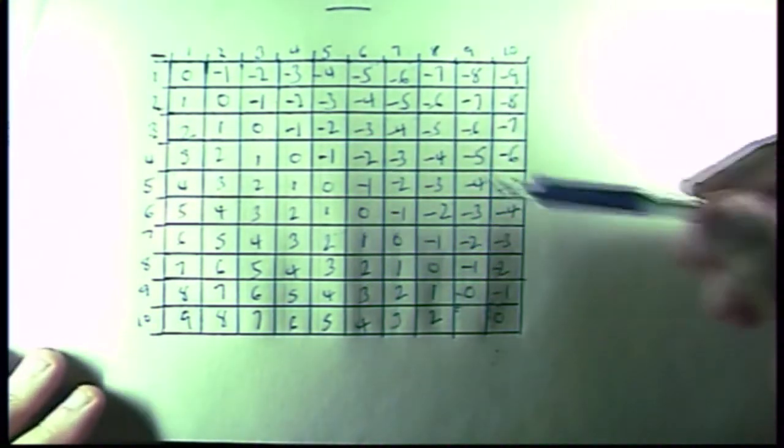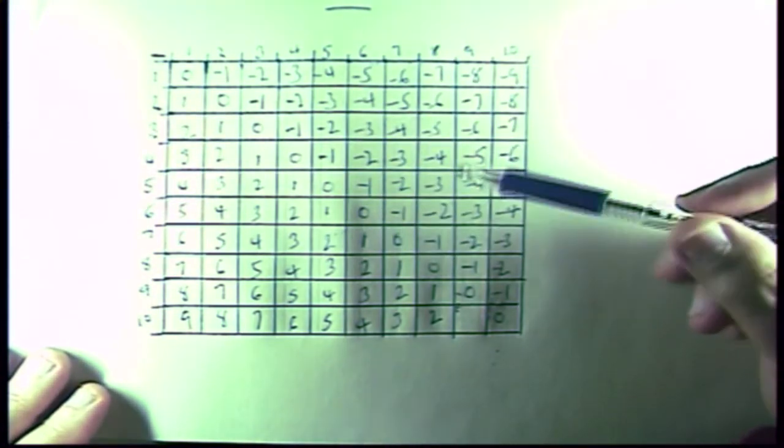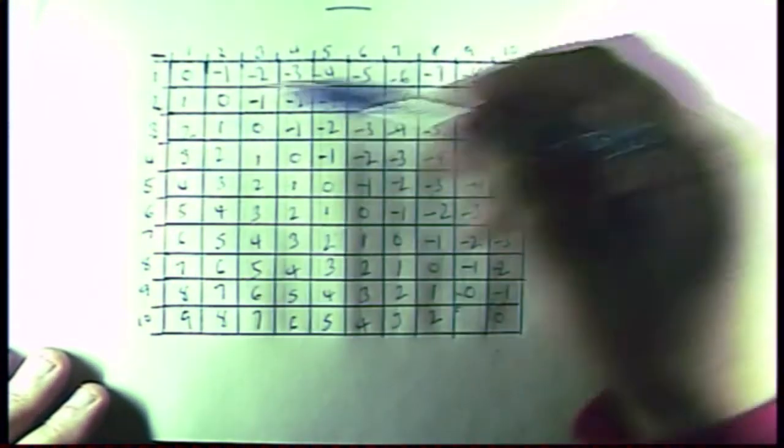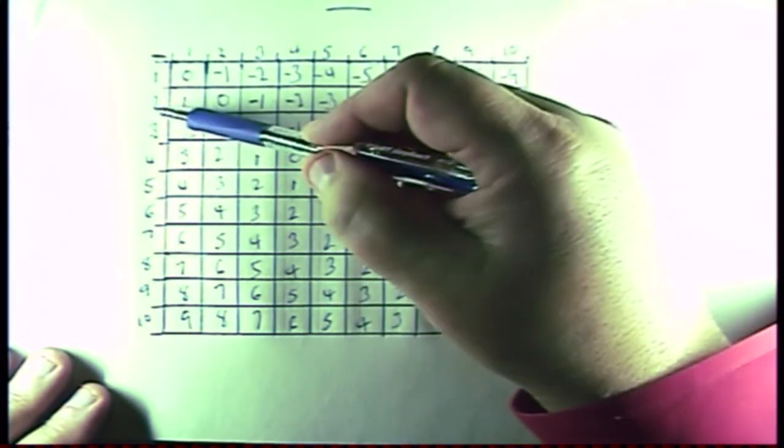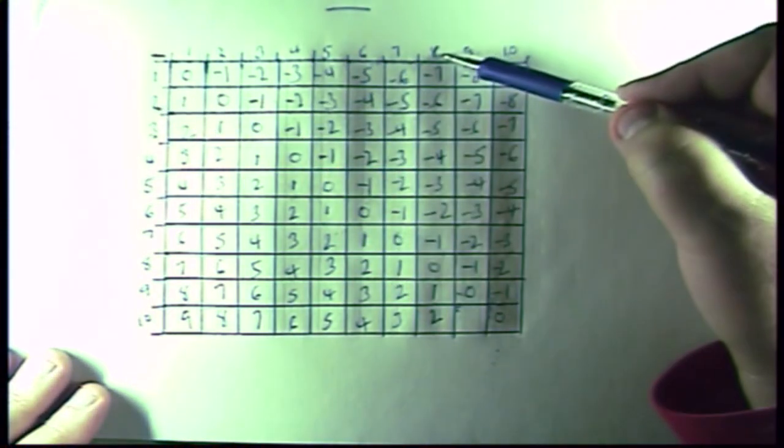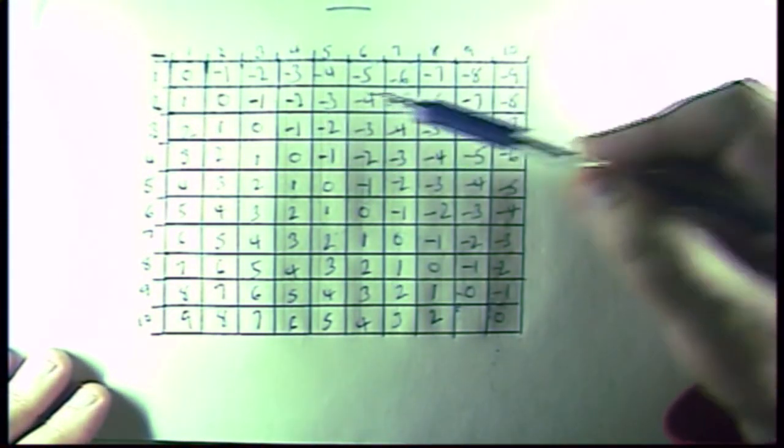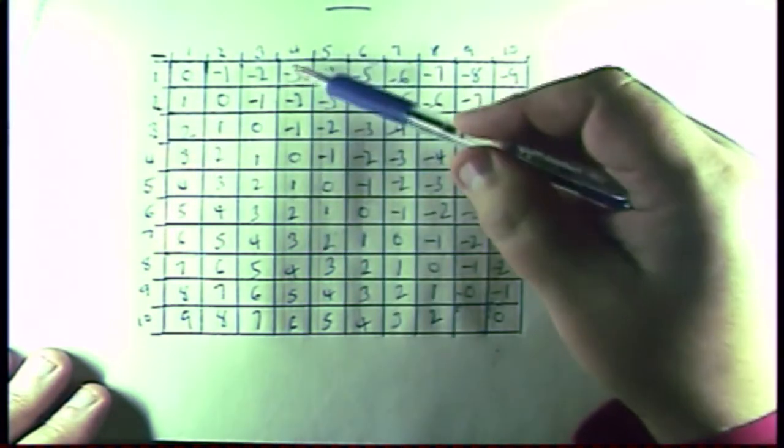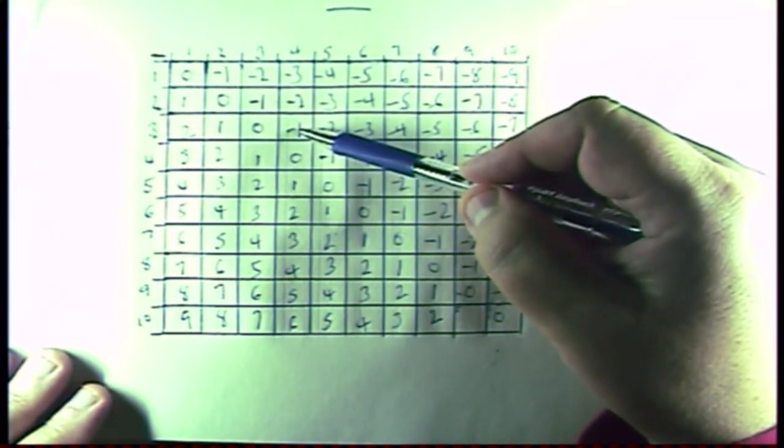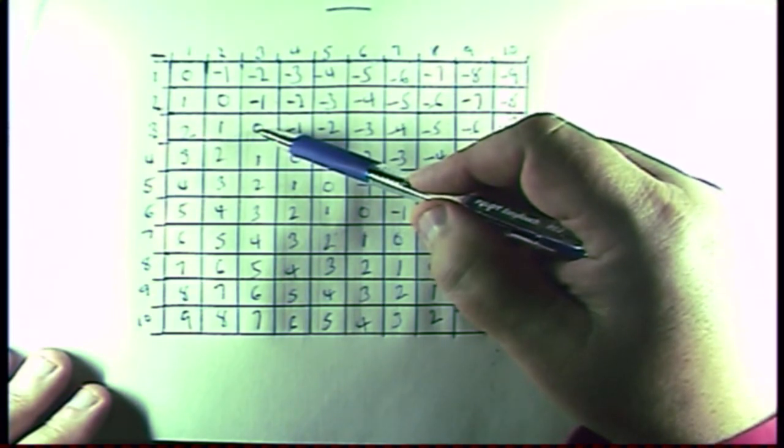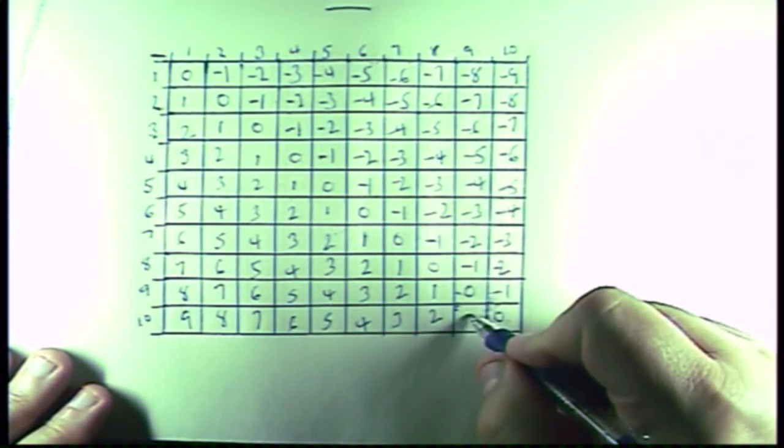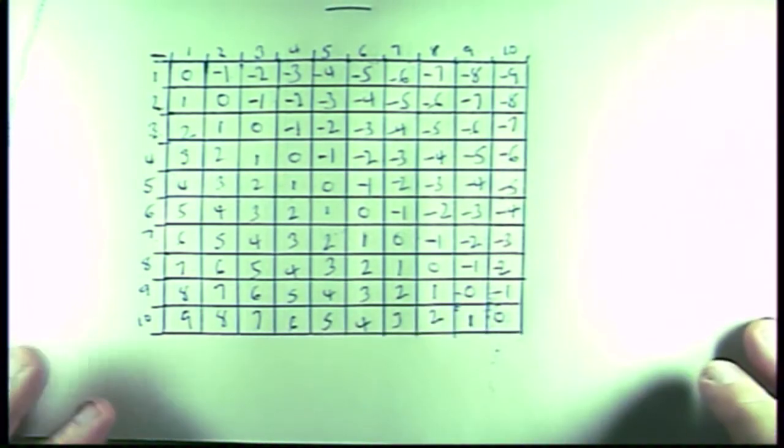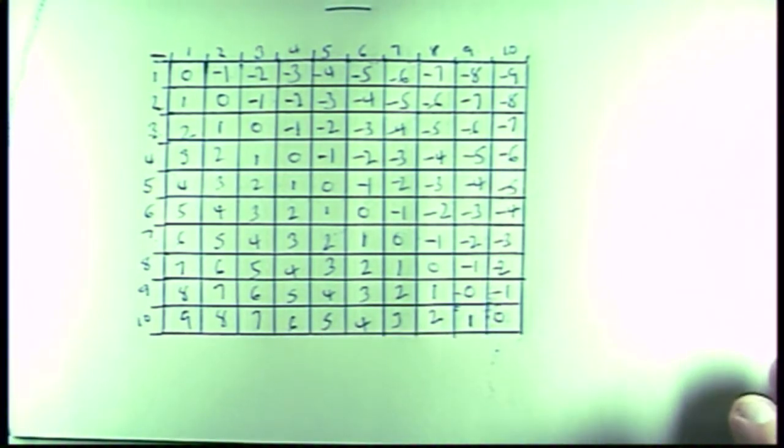And so now we've made our subtraction grid. So we can look on any of these numbers along the sides, and we can say 7 minus 5 is going to be a 2. 2 minus 8 is a 6. 3 minus 4 is a minus 1. And then 3 minus 3 is a 0. 10 minus 10 is a 0. And of course we have this one here. 10 minus 9 is a 1. And so this has made our subtraction grid, and it shows you how we got it.